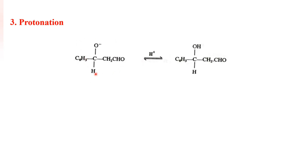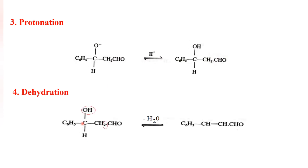The third step is protonation. A proton is added to the intermediate and reacts with the negatively charged oxygen, removing the negative charge and converting it to a hydroxyl group — giving another intermediate. The fourth step is dehydration: the hydroxyl group and a hydrogen are removed as water, forming a double bond between the two carbons to satisfy valency, yielding the alpha-beta unsaturated carbonyl compound, cinnamaldehyde.